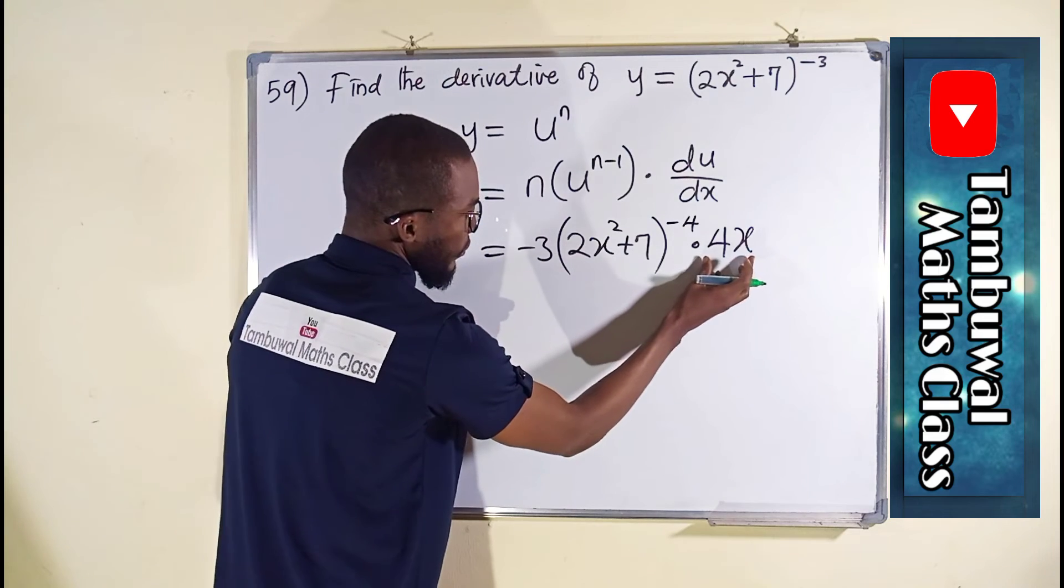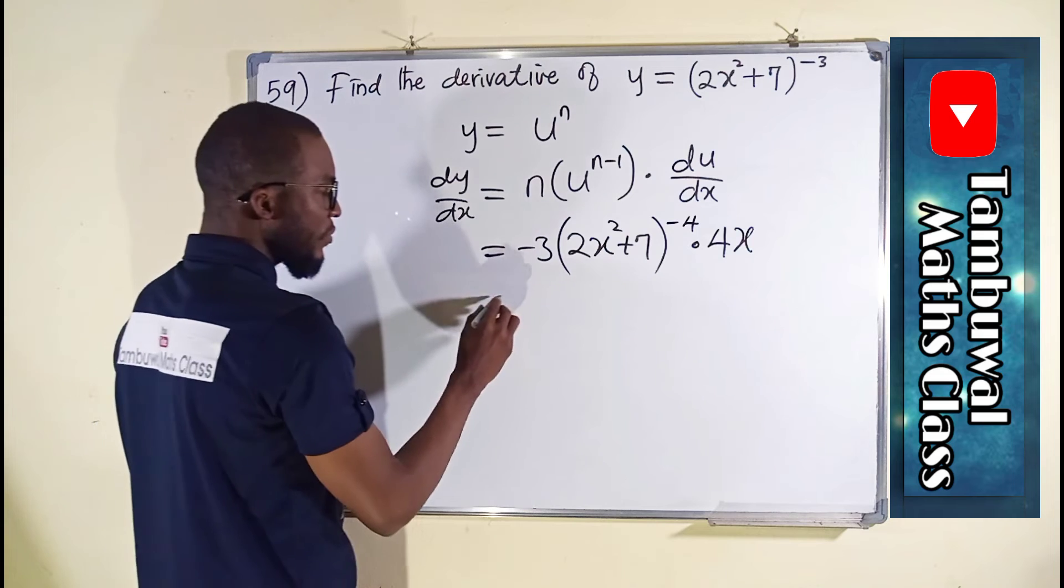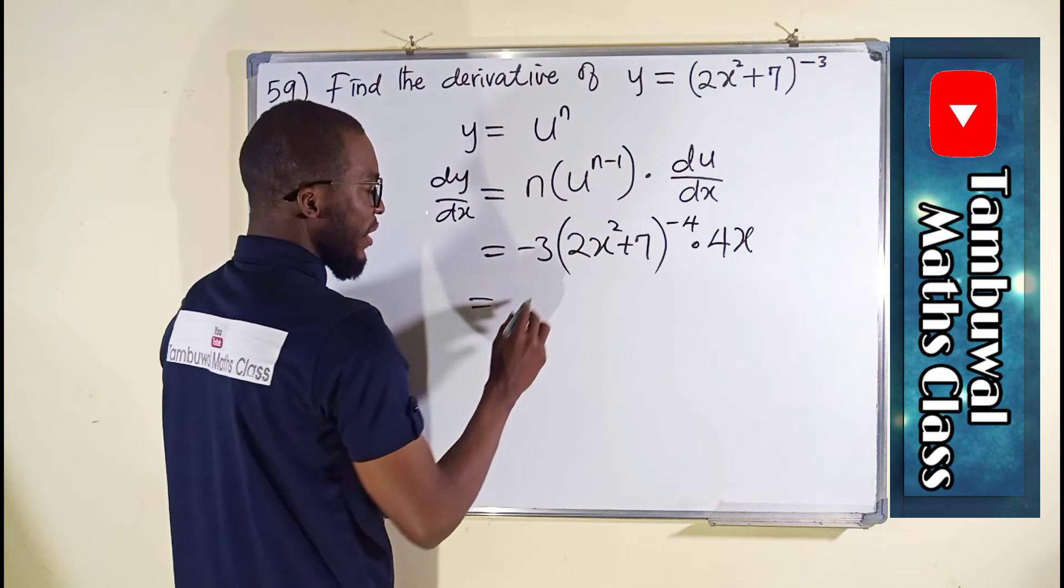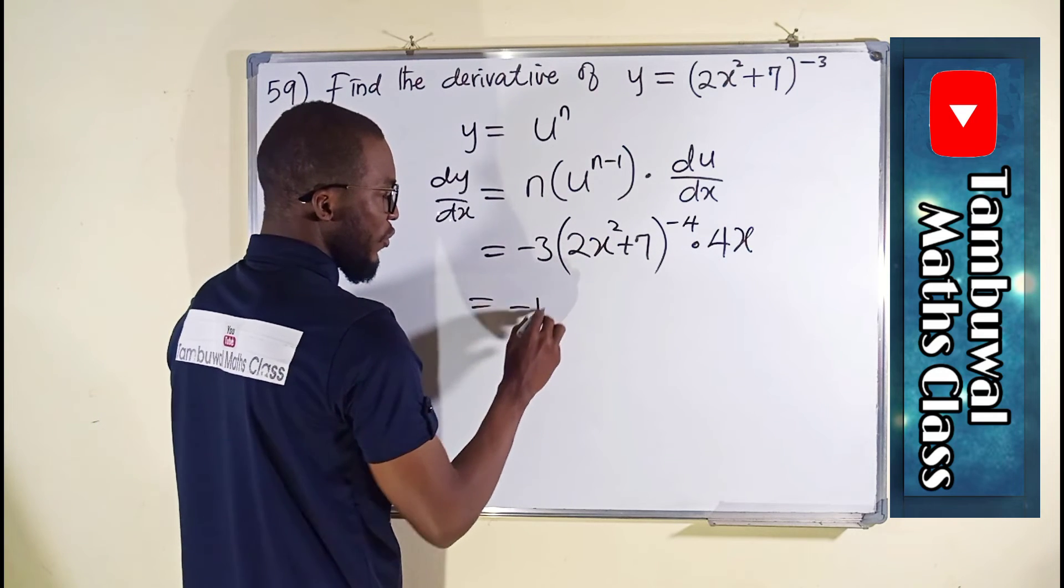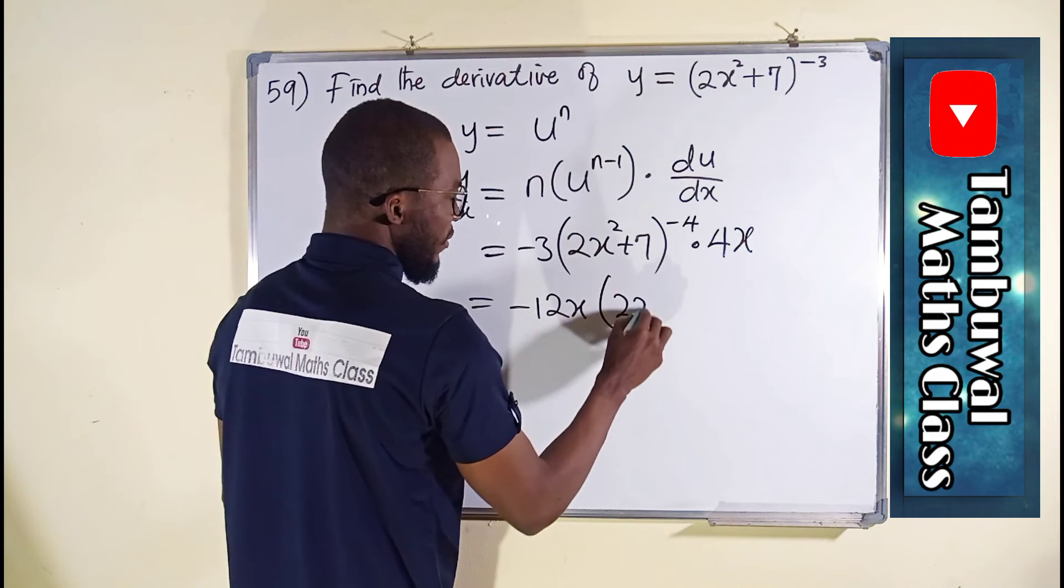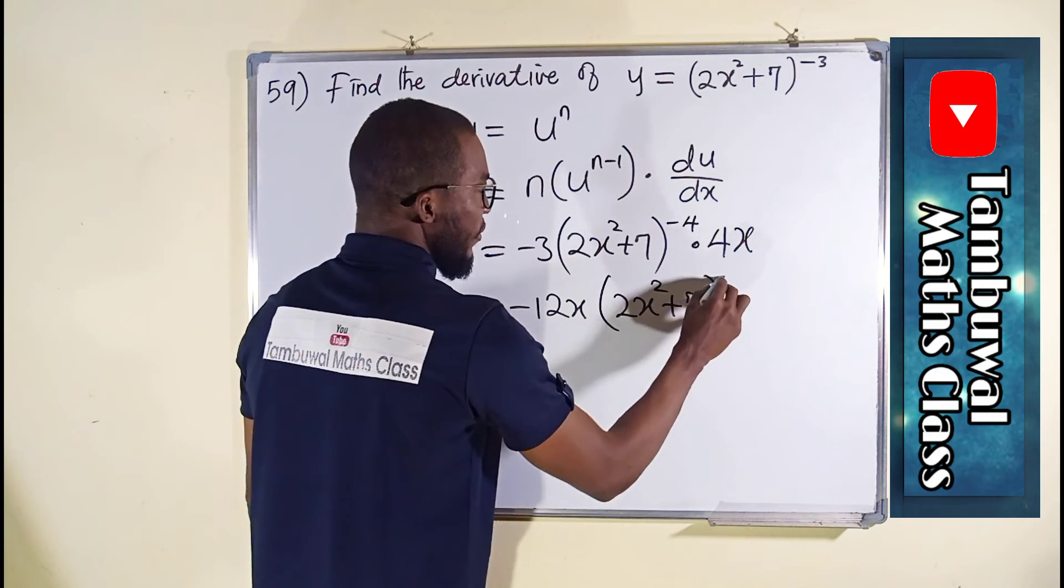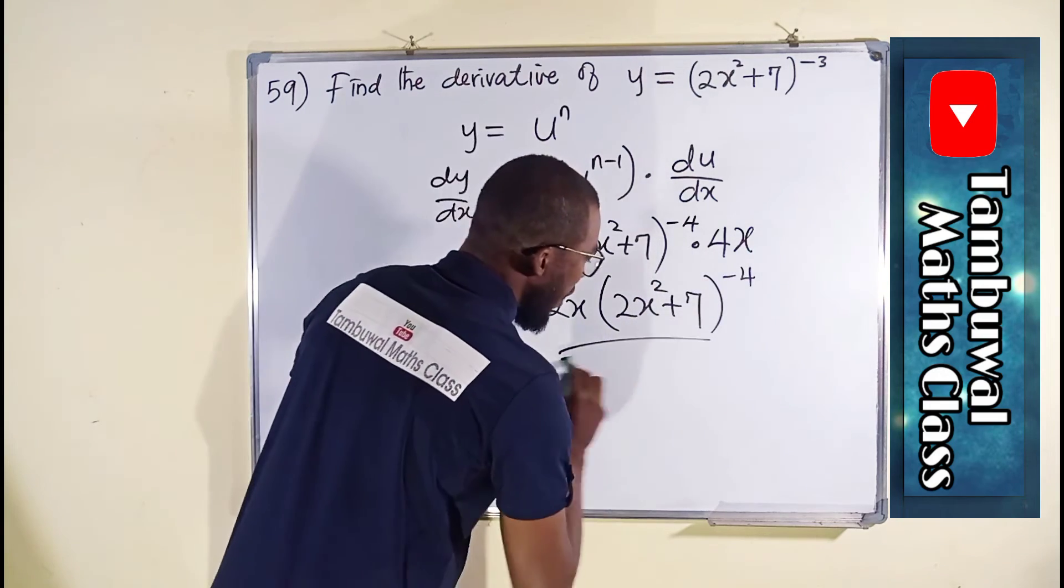But since we are multiplying, we can take this 4x and multiply it by this negative 3. 4 times negative 3 is negative 12x, in the bracket we have 2x squared plus 7, all raised to the power of negative 4, which is our answer.